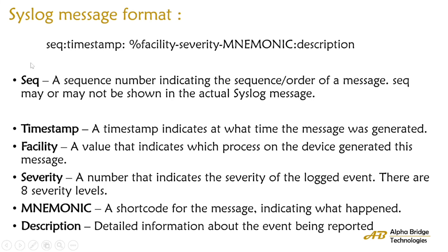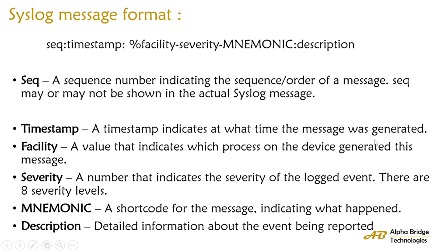After the timestamp, there will be a facility, which shows which process on the device generated this message. After the facility, there will be a severity level, which shows how severe the message was — whether it is an emergency message, an alarm, or a warning. There are a total of 8 severity levels in the syslog message, and we will see all 8 levels in the next slide. After the severity level, there will be a mnemonic, which is a shortcode of the message indicating what happened at that event. After the mnemonic, there will be a description, which gives detailed information about the event reported in the switch or device.